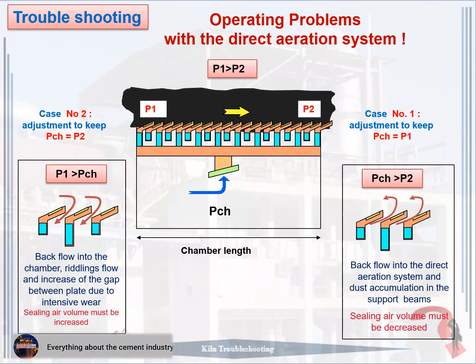The solution for Case 1: adjustment to keep PCH equal to P1. Case 2: P1 greater than PCH — backflow into the chamber, riddling's flow, and increase of the gap between plates due to intensive wear. Cooling air volume must be increased. The solution: adjustment to keep PCH equal to P2.